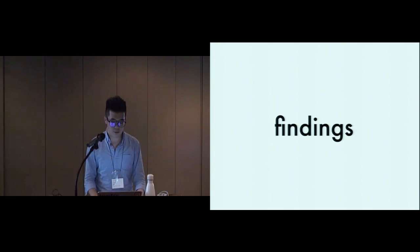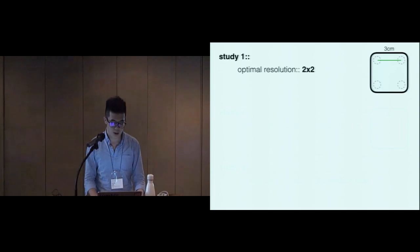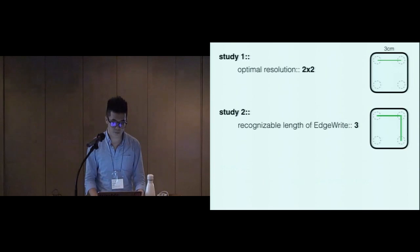Here, I will briefly conclude the findings. Three studies were designed to answer the big research question, how do we effectively display alphanumeric patterns on the wrist? In the first study, we compared two resolution, and the result showed that 2x2 configuration benefits in recognition rates and efficiency. After that, we display all the EdgeWrite patterns to obtain the recognizable length, which is 3. And we also understand the optimal strategy of segmenting a pattern, that is applying as many three vibration strokes as possible.